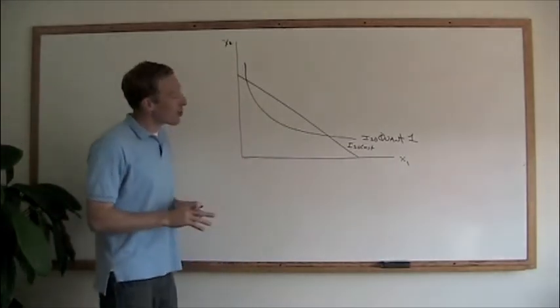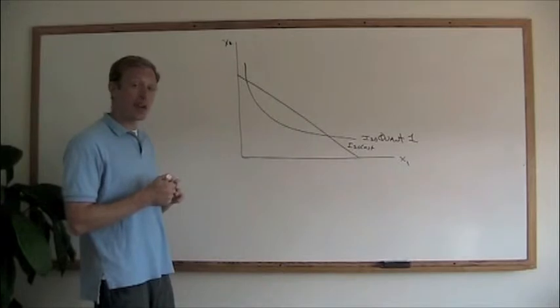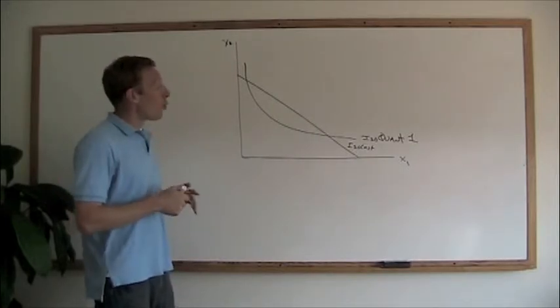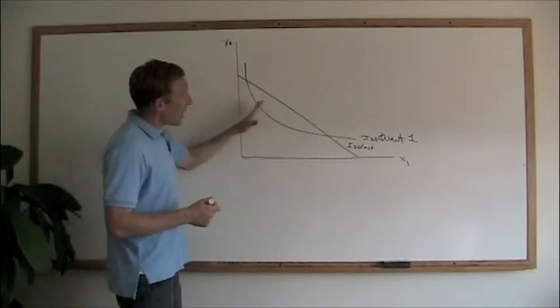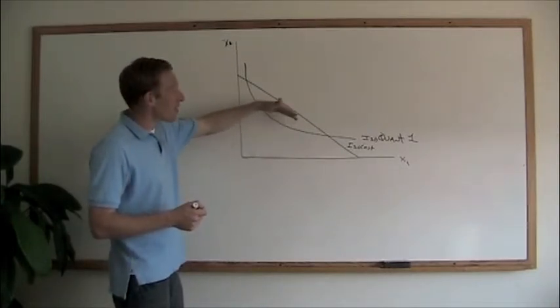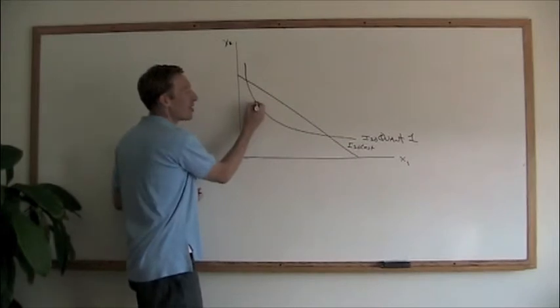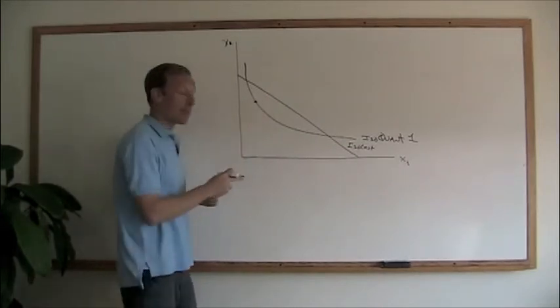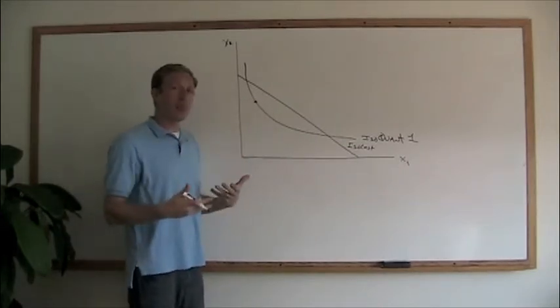Now if we look at these two curves, the isocost and the isoquant line, what we notice is that we've got a lot of options inside this isocost line. That basically means if we're producing on this isoquant at this point, we're not spending our budget.